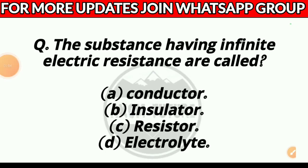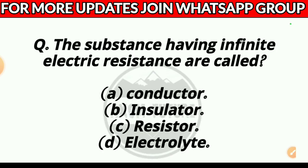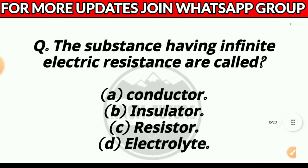Question 15. The substances having infinite electric resistance are called: Option A, conductor; Option B, insulator; Option C, resistor; or Option D, electrolyte. Answer: Option B, insulator.